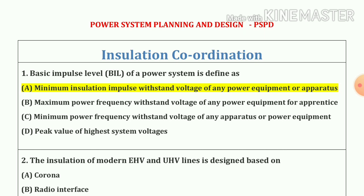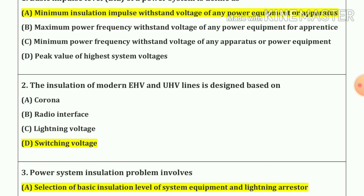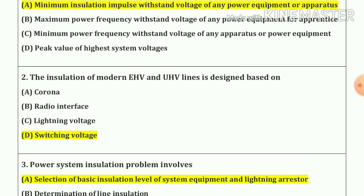Question number 1. Basic Impulse Level (BIL) of a power system is defined as the minimum insulation impulse withstand voltage of any power equipment or apparatus. So our answer is option A.